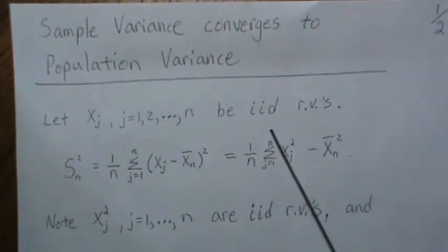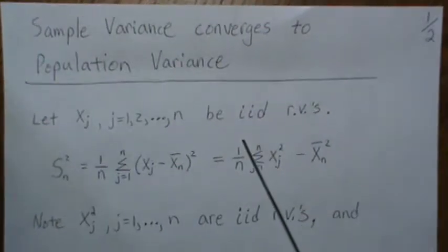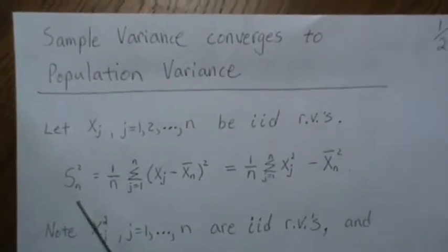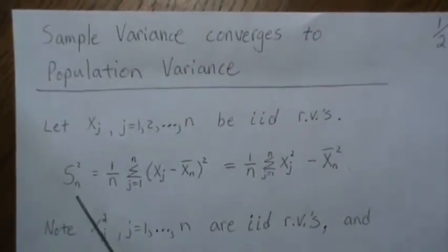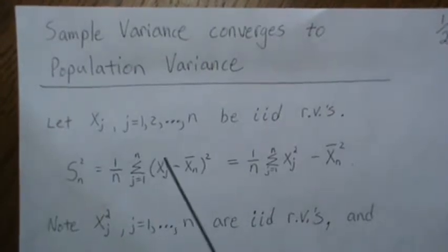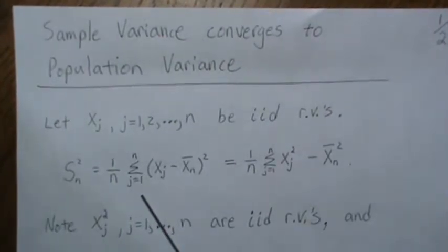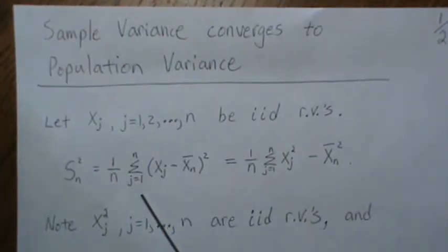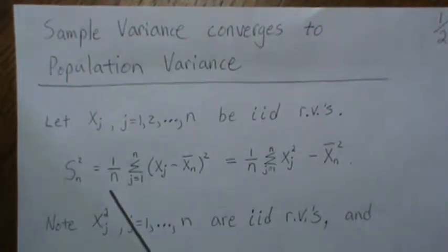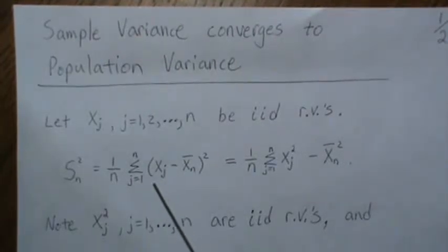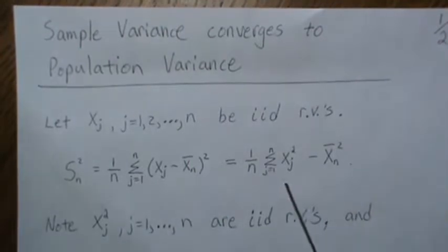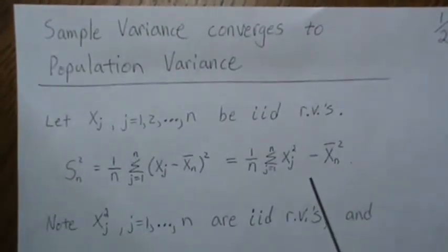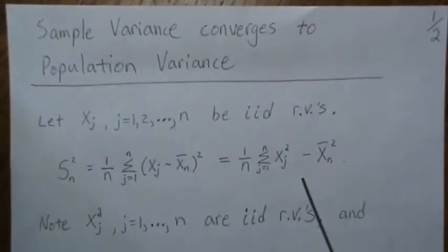Let XJ be IID random variables. This is the sample variance not adjusted for bias — or the maximum likelihood estimate of the population variance — and it can be rewritten in a particular form. We're not going to show that derivation; it's pretty common.